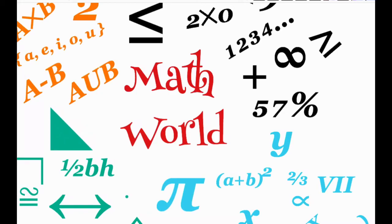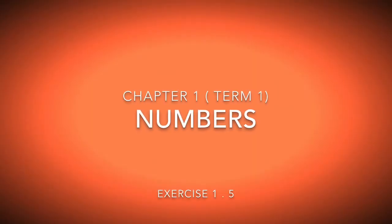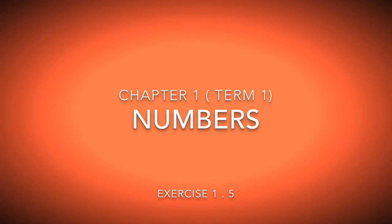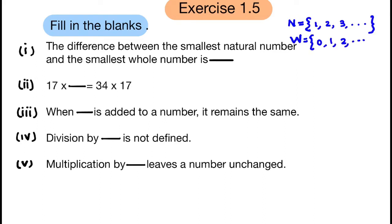Welcome to Math World, Chapter 1: Numbers, Exercise 1.5 — Fill in the blanks. The difference between the smallest natural number and the smallest whole number. Natural numbers are 1, 2, 3, up to infinity. Whole numbers are 0, 1, 2, up to infinity.